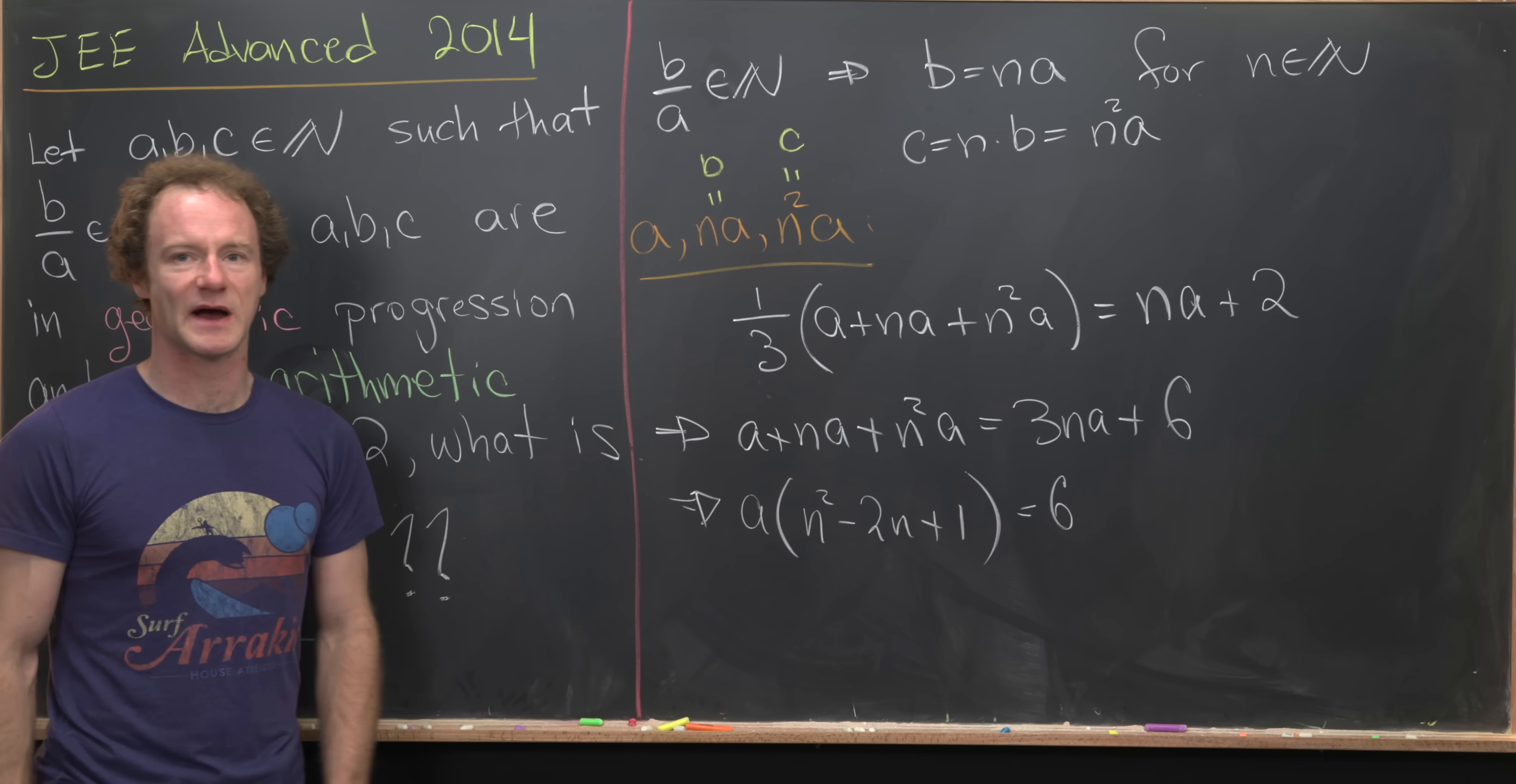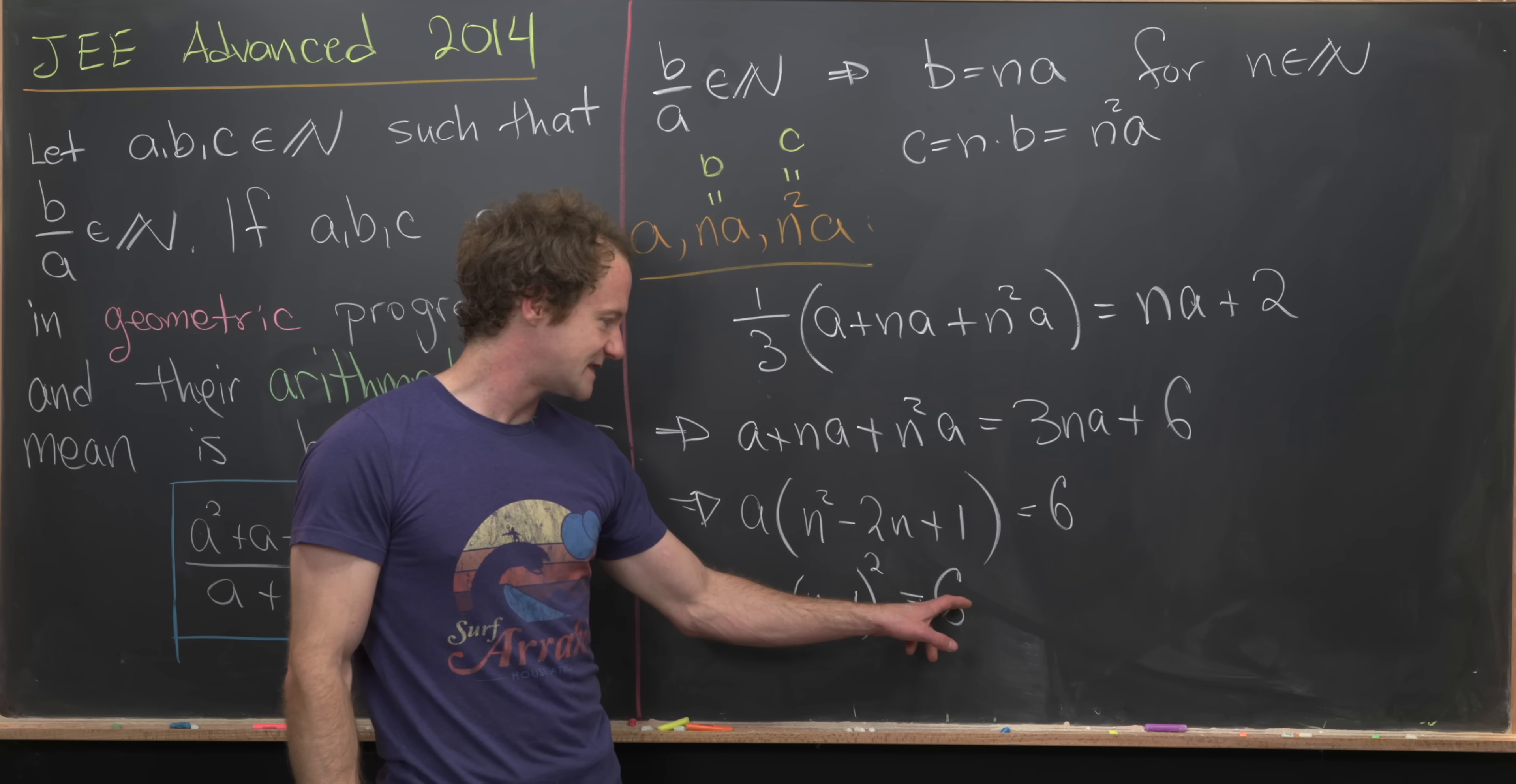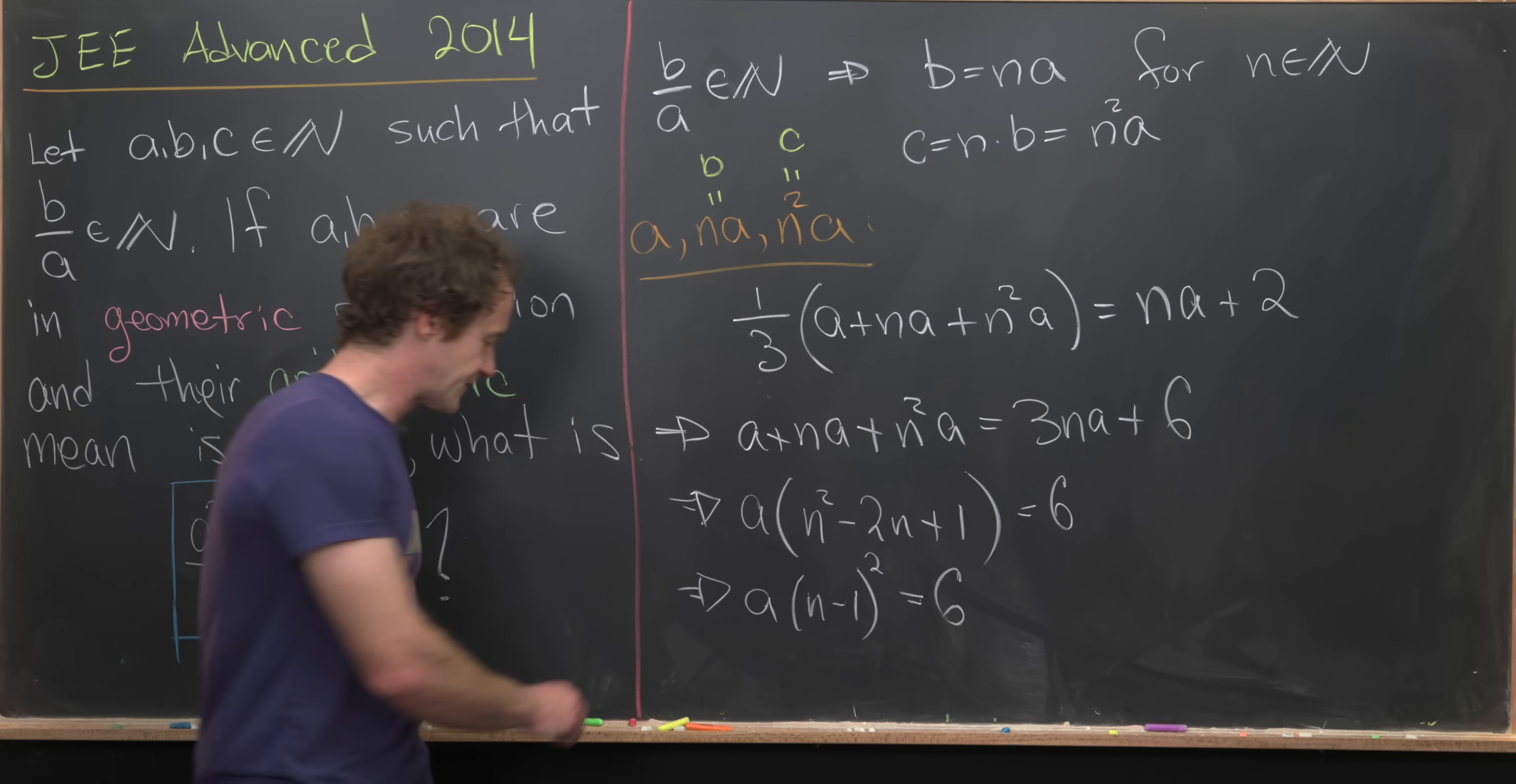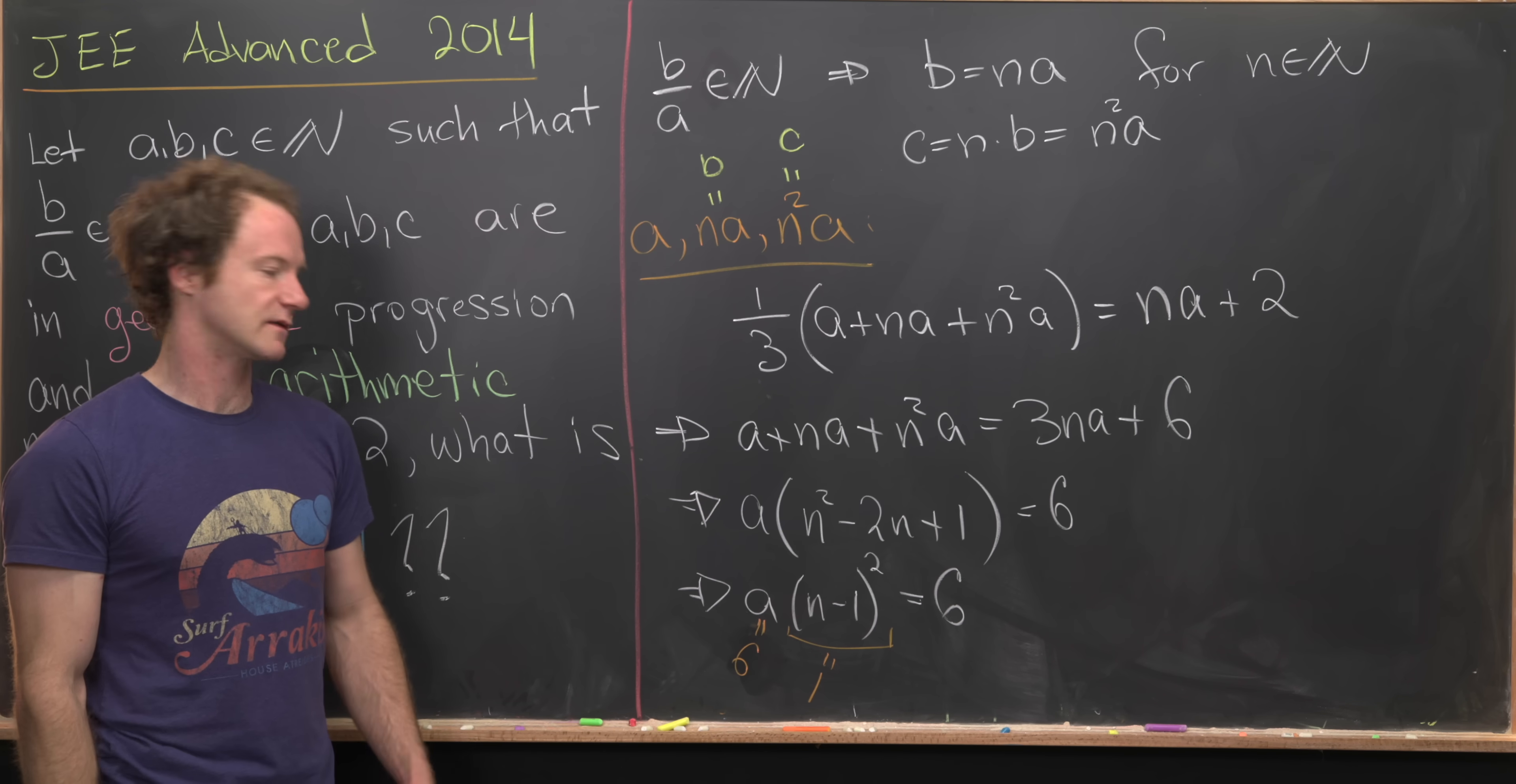But now notice this is just the square of a binomial. In fact, it's N minus 1 squared. So we can write this as A times N minus 1 quantity squared equals 6. So let's see what we've got. We've got 6 equals A times a perfect square. But the only way to write 6 as A times a perfect square is for A to be equal to 6 and N minus 1 squared to be equal to 1.